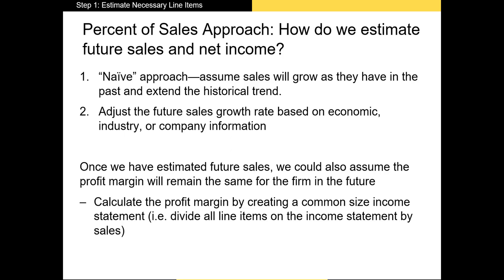There are two broad ways you can forecast sales growth of a firm. The first is the naive approach, where you assume the firm will continue to grow its sales revenue at the same rate it had over the previous years. This should be your method of last resort since the firm's past position is likely to be different than its current position, and its growth opportunities and macroeconomic environment might have changed as well.